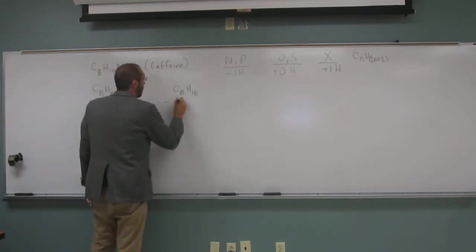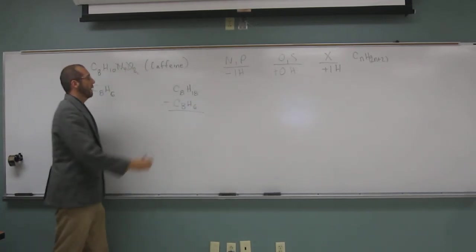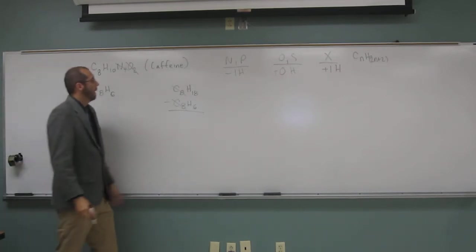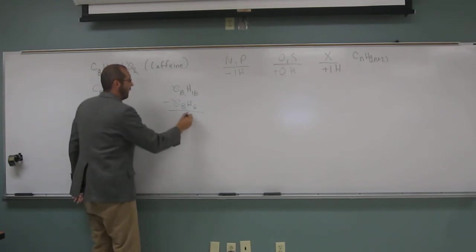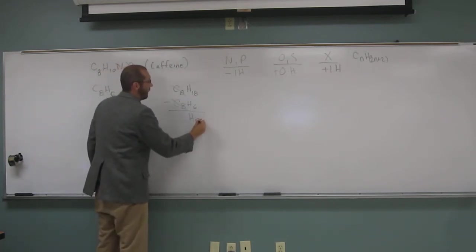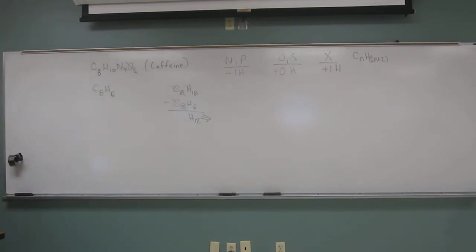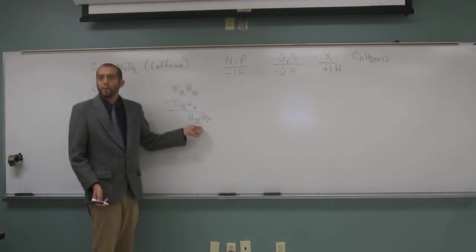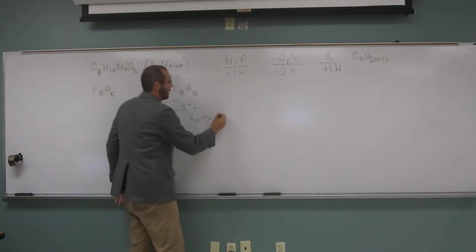So, obviously, every time that you do this, the carbons are going to cancel out. So, we have 18 minus 6. What is that? 12. Very good. And, remember, we're doing this for every two hydrogens. So, every two hydrogens is one unit of unsaturation. So, if we've got 12, how many units of unsaturation or degrees? Six degrees of unsaturation.